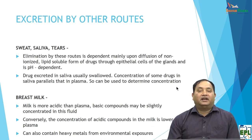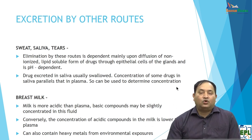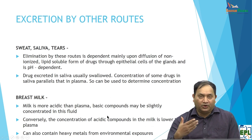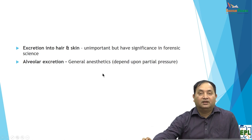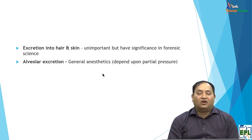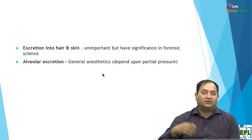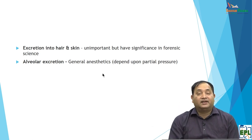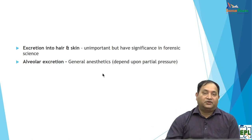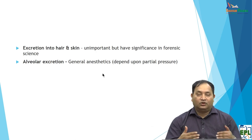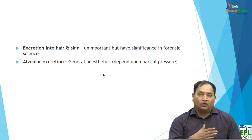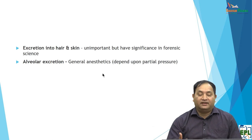Many drugs are listed in package inserts as contraindicated during lactation because they are excreted in breast milk and can expose the baby. Hair is another route — drugs are deposited in hair as it grows at a particular rate, and this is used in therapeutic drug monitoring and forensic analysis, as famously applied in investigating Napoleon's exposure to arsenic. Inhalation is also a route of excretion — alveolar excretion occurs for gases like general anesthetics. So, while the kidney is the primary organ, biliary, sweat, tears, saliva, milk, hair, and lungs are all minor but recognized excretion routes.